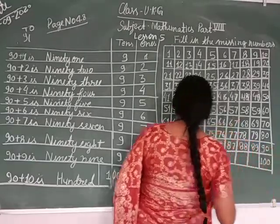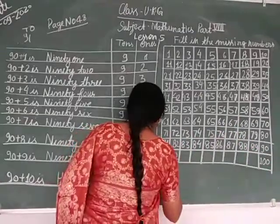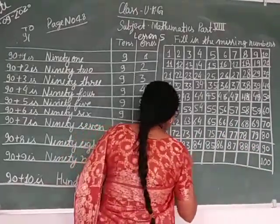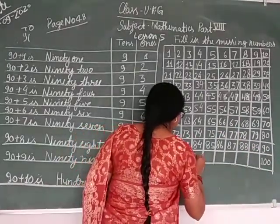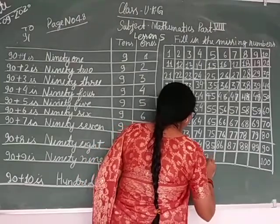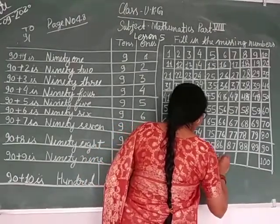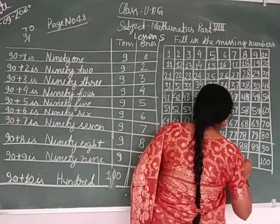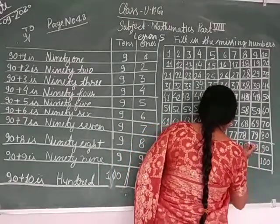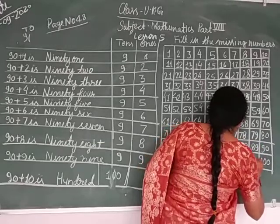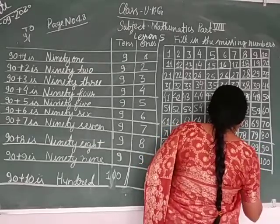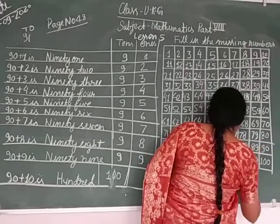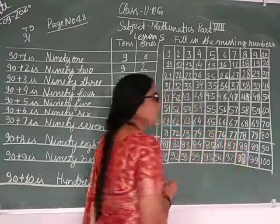Now let's say 91, 92, 93, 94, 95, 96, 97, 98, 99, and 100.